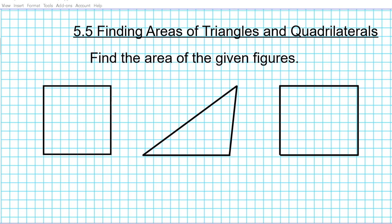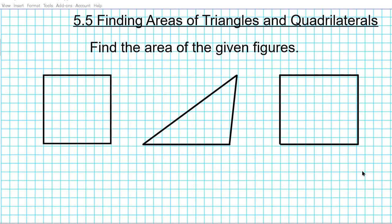The instructions for the examples we're doing is to find the areas of the given figures. For question number one, we have a square — let's say it's seven by seven. When you have four congruent sides it could be a rhombus or a square, but if all angles are 90 degrees it automatically makes it a square. So we have a regular quadrilateral, namely a square, and we want to find the area.